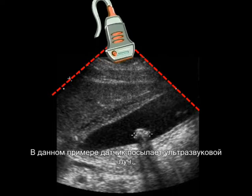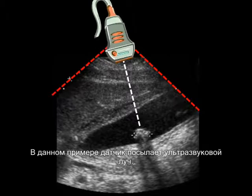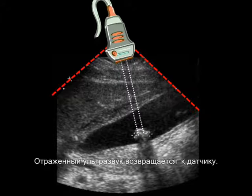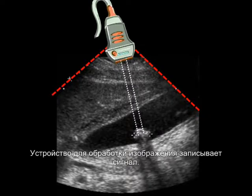In this example shown here, the sound beam exits the transducer and impacts on the gallstone, which is echogenic, showing up as white. The gallstone reflects sound back to the transducer, which is recorded in the imaging device.